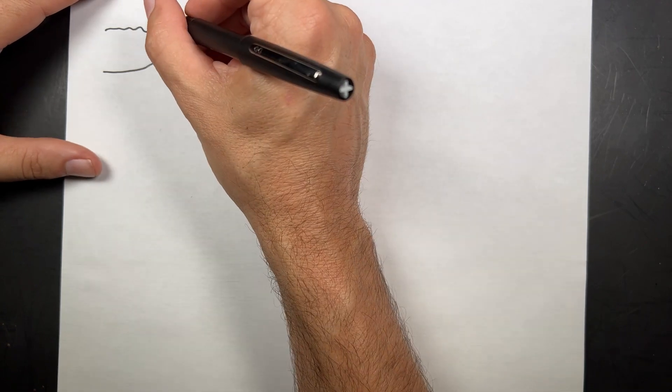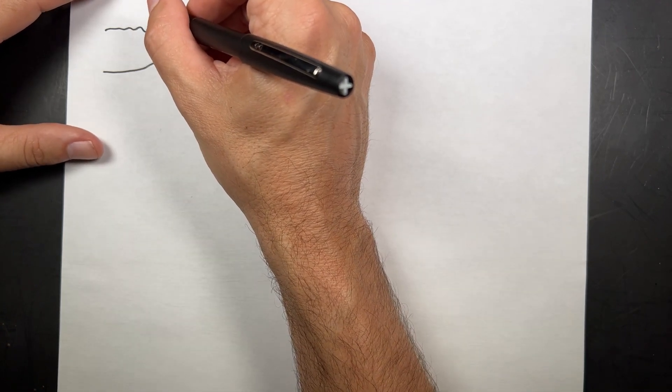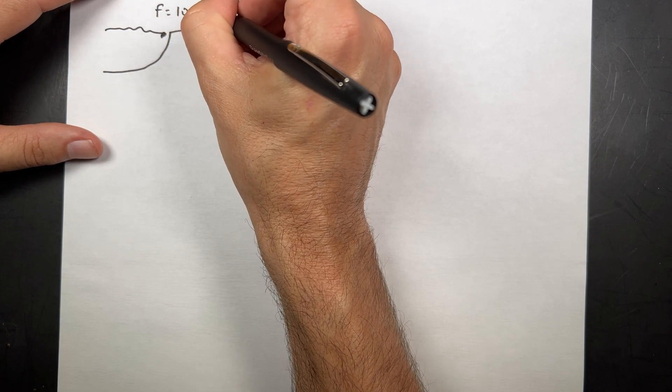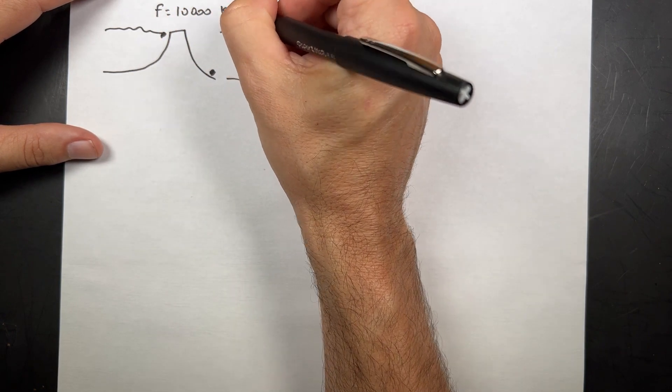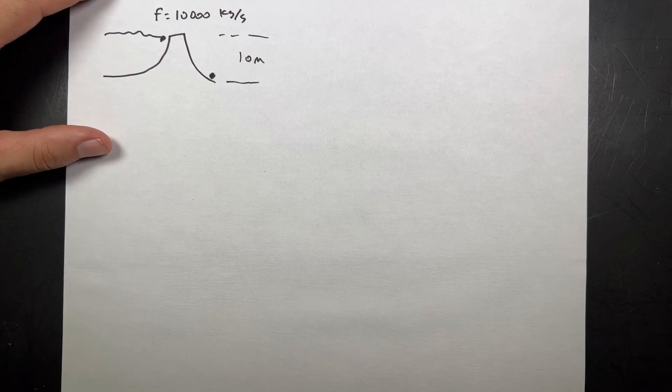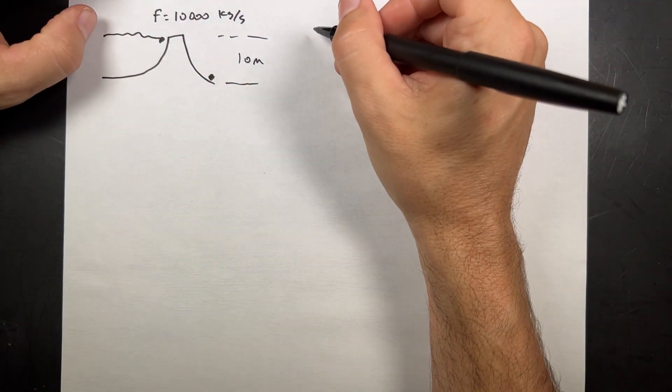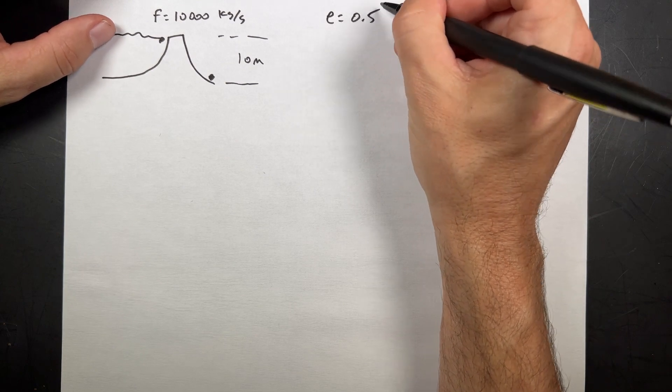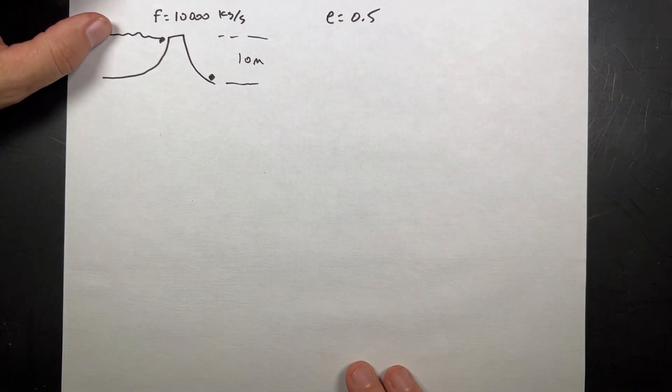And then I'll call this F is 10,000 kilograms per second. So I guess that's probably a small stream, but who knows? And that's all I have. Oh, except the efficiency E is 0.5. Okay.